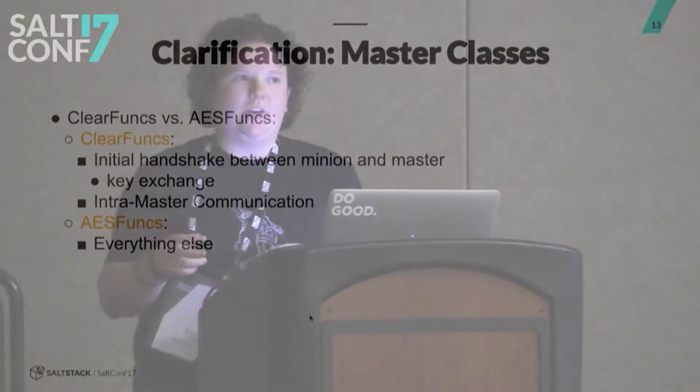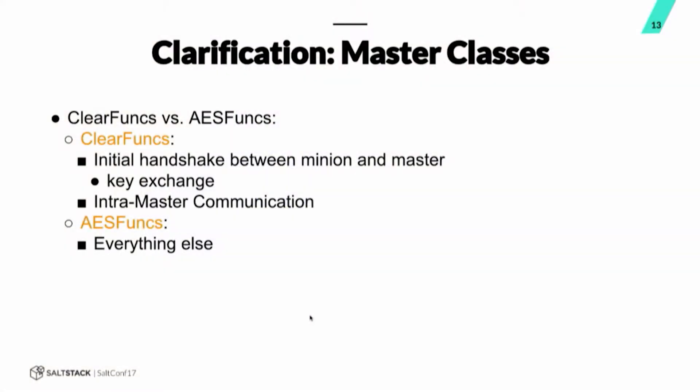You might have a question about the distinction between using the clear_funcs class and the AES_funcs class. The clear_funcs class handles the initial handshake between the minion and the master when we do that key exchange. It also handles all of the intra-master communication. And then AES_funcs does everything else — we want to make sure that those returns from the minions are encrypted. Sometimes that's a point of confusion for people, so I just wanted to point that out.